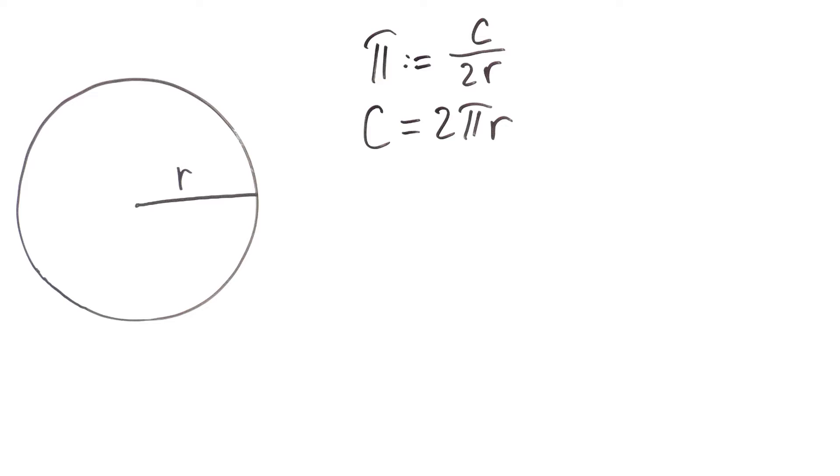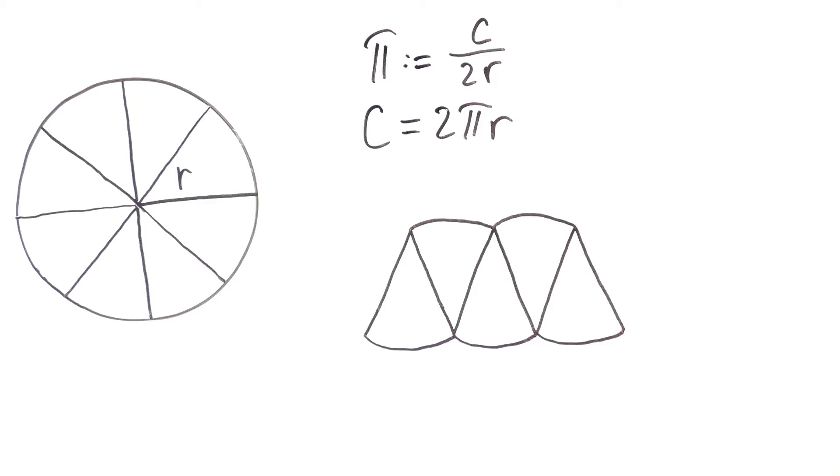To get the area of a circle, we'll divide the circle into an even number of congruent parts and then we'll rearrange them in the following way. We start with one part, then put the second part next to it, rotated by 180 degrees, then the third, the fourth, and we keep doing this until we use all the parts.